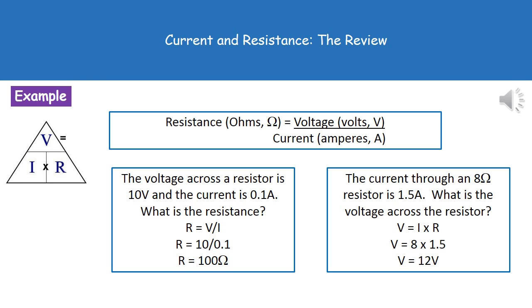Or if we needed to rearrange: the current through an 8 ohm resistor is 1.5 amps, what's the voltage across the resistor? So voltage is current times resistance. So voltage is going to be 8 times 1.5 which gives us our answer of 12 volts.